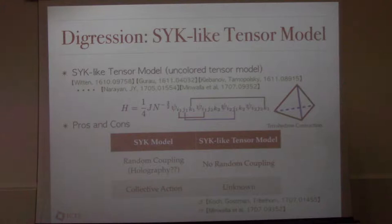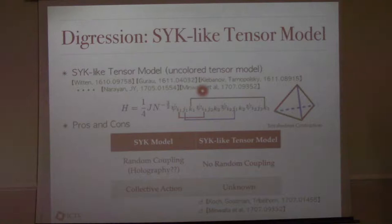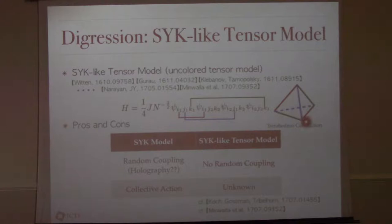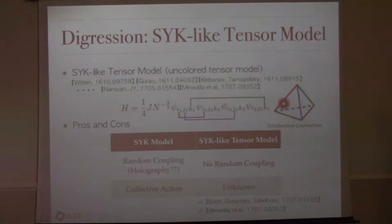There is another SYK-like tensor model, also a quantum mechanical model. Unlike the SYK model which is a vector model, the tensor model has fermionic variables with a rank-3 tensor. In general, you can consider rank-3 or rank-5, or any odd rank. The Hamiltonian is represented by a tetrahedron where each vertex represents a fermion and each edge represents the contraction of an O(N) index, exactly as a tetrahedron.